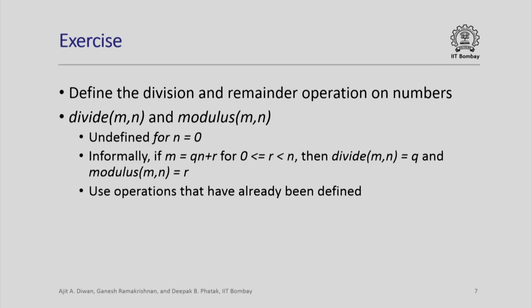As an exercise, you can try to define the division and remainder operations on numbers. These are a little bit more complicated. These operations are not defined for all cases — when n is equal to 0, we do not have any definition for divide m, n. Division by 0 is not allowed; the operation is undefined for that case. The informal definition of integer division is: if we write m as equal to q times n plus r, where q is the quotient and r is the remainder with r between 0 and n, then we call divide m, n equal to q and modulus of m, n equal to r.